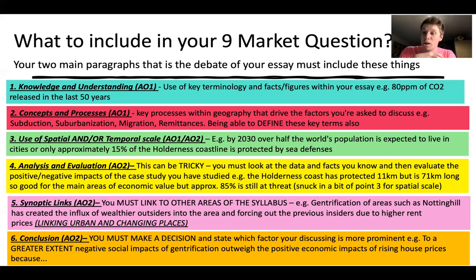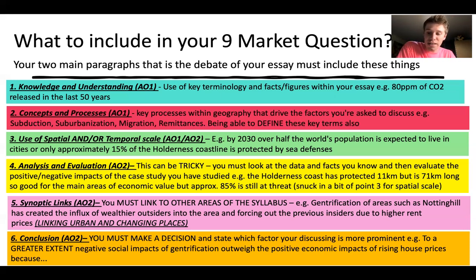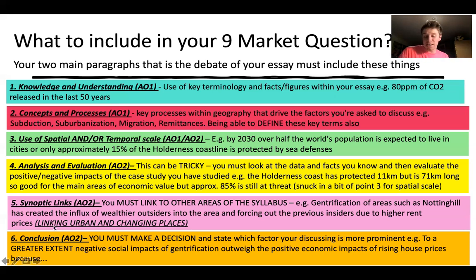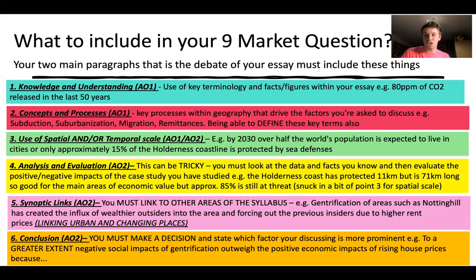Next, synoptic links — you must make reference to other areas of the syllabus. For example, the gentrification of areas such as Notting Hill has created an influx of wealthier outsiders, forcing out previous insiders due to higher rent prices. This links the insider-outsider theory from changing places with gentrification within contemporary urban environments, showing the holistic approach your examiners want to see. Finally, you must make a decision and state which factor is more prominent — for example, the negative social impacts of gentrification outweigh the positive economic impacts because rising house prices are displacing original migrants.